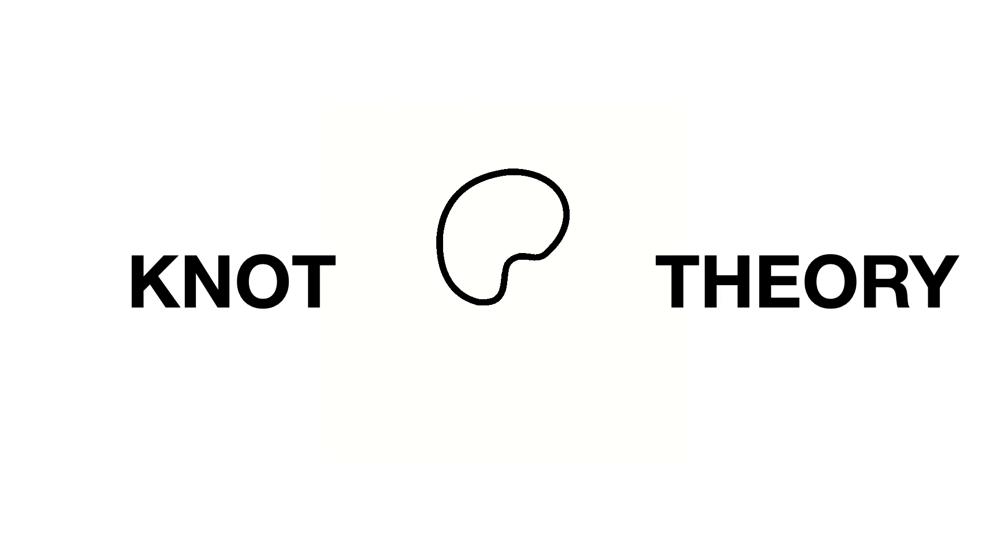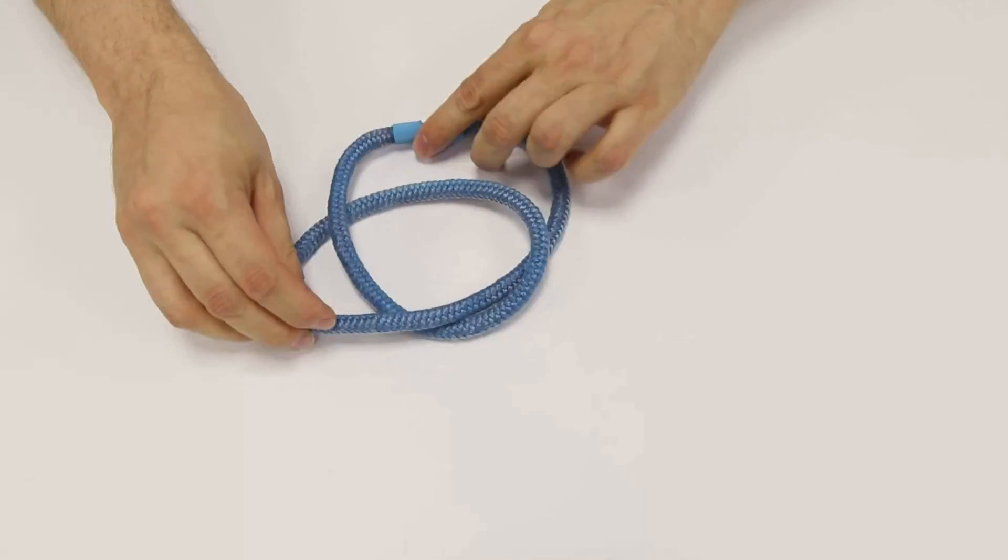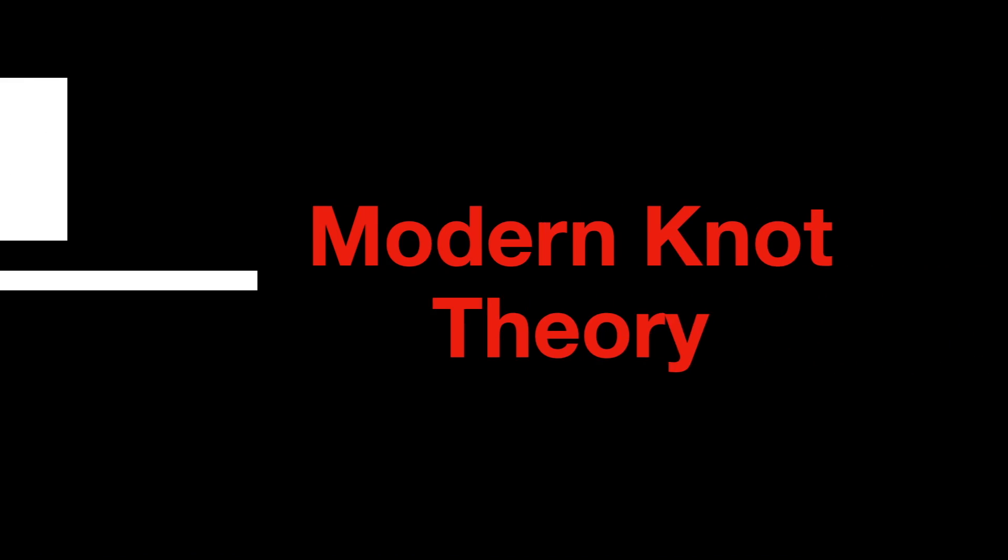Knot theory, a field that's not just about shoelaces and bow ties. It's a field that has proven to be crucial for both the development of pure mathematics and the advancements of the modern world. But did you know that there were nine discoveries that followed one another without which knot theory would not be possible?